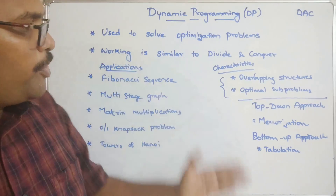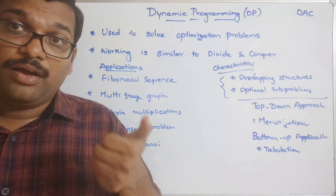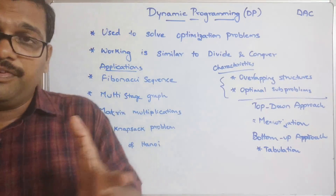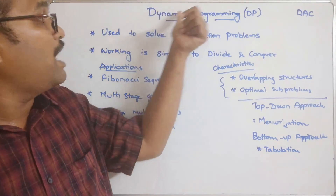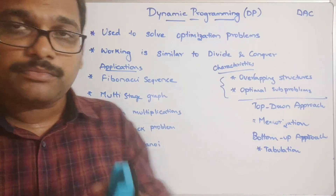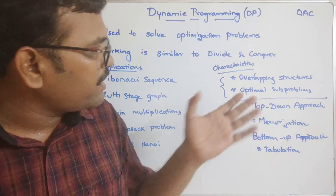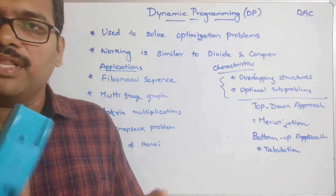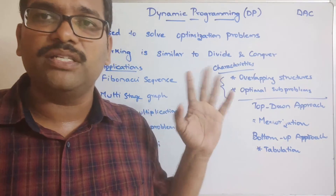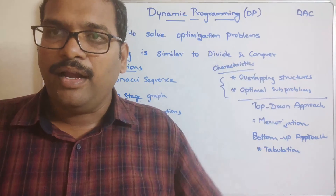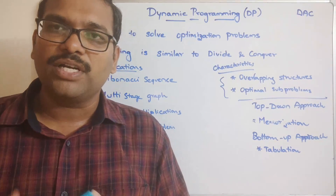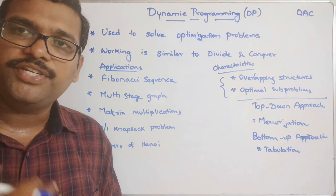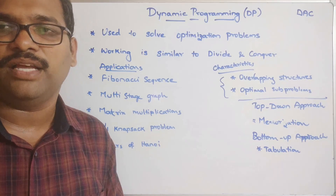I hope you understood the top-down and bottom-up approaches, overlapping sub-problems, and non-overlapping sub-problems. That is the main difference between dynamic programming and divide and conquer — in divide and conquer the division is done without overlapping sub-problems, whereas in dynamic programming it is done with overlapping sub-problems. In further sessions we will move on with applications and solve problems using this dynamic programming approach. If you have any doubts, post them in the comments. Like, share, and subscribe. Thanks for watching.